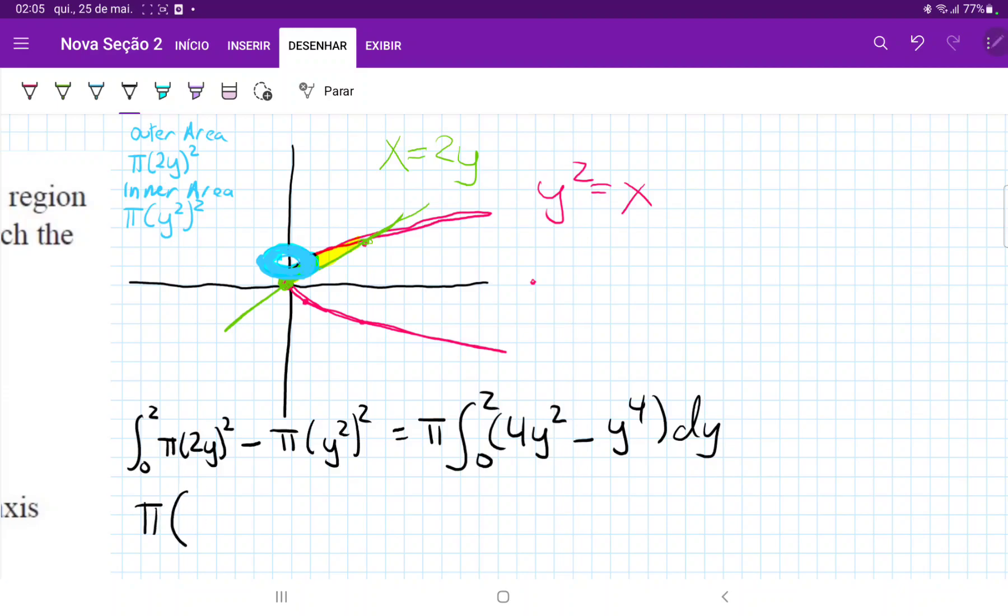So this is pi times 4y cubed over 3 minus y to the power of 5 over 5, which is equal to pi. Sorry, I should have done the boundaries from 0 to 2.